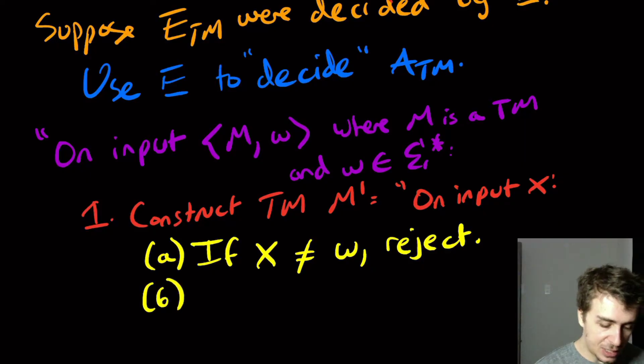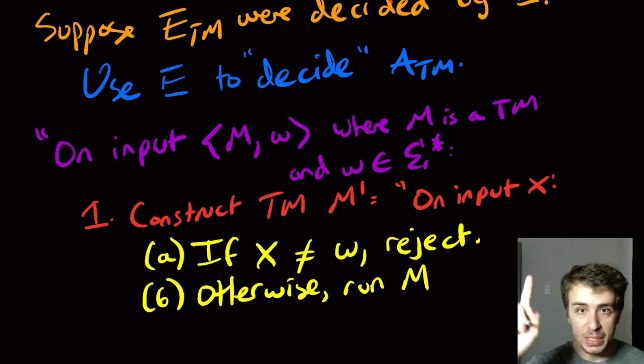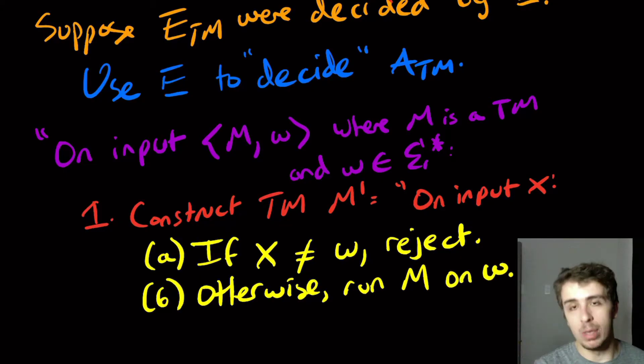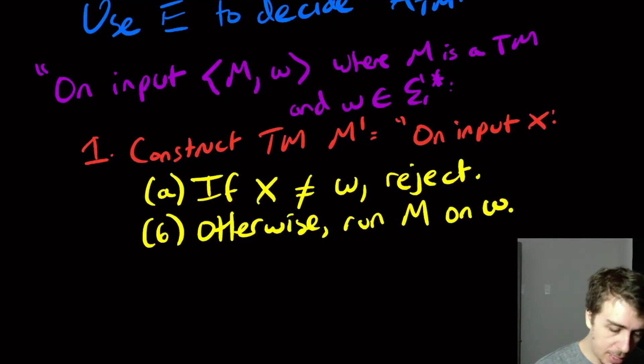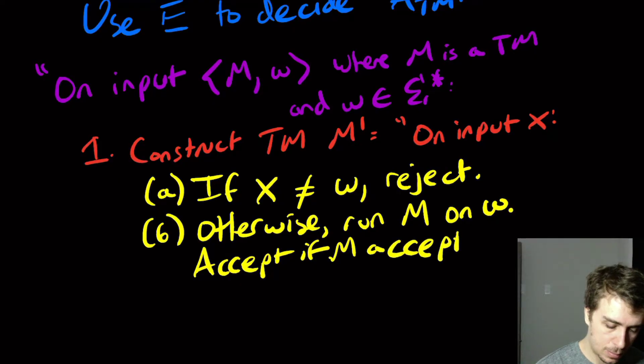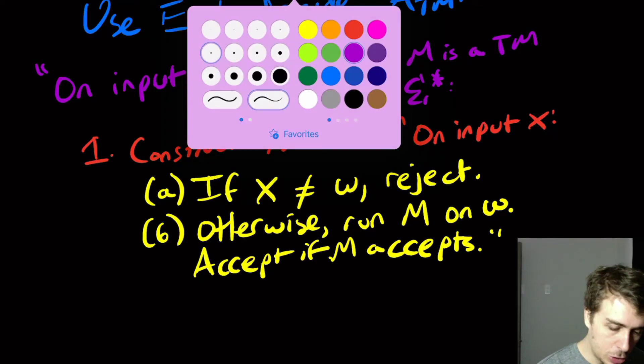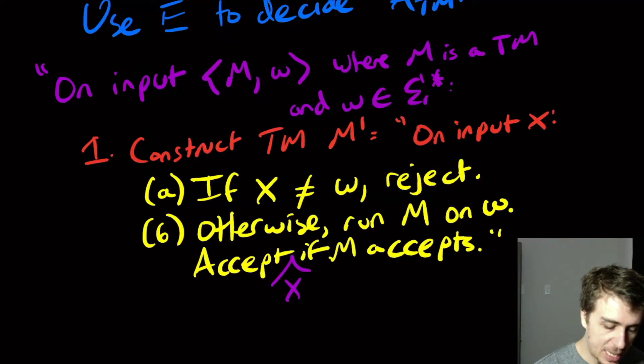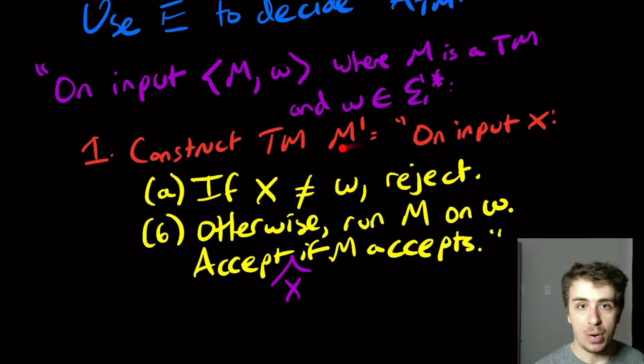And if it is equal to W, we're going to run the original machine M upstairs on W. The original, well, since X is equal to W, it's the same string, it doesn't actually matter. In fact, there are many ways you could have done this. Accept if M accepts. So what I really should say here is that we're going to accept X. So this M' thing is going to accept as input exactly when M accepts W.